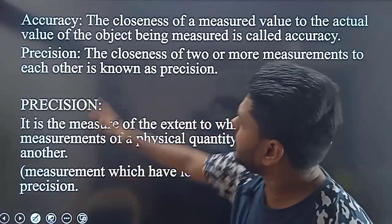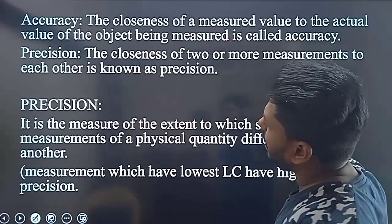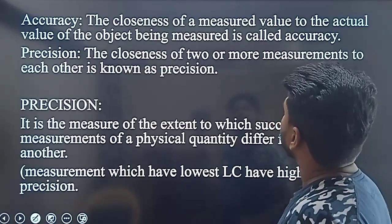Very well. So that is the definition. Thinking about it, accurate value is the closeness of a measured value to the actual value of the object. This is the accuracy.